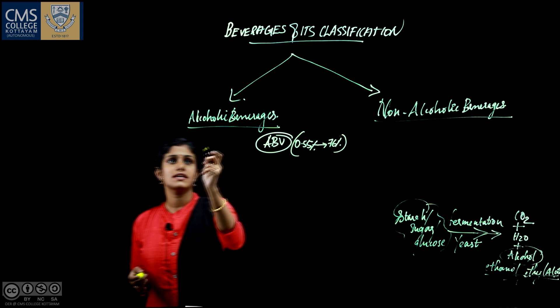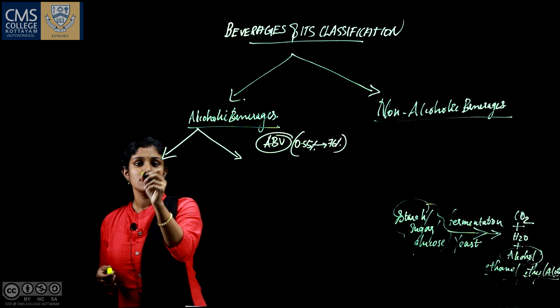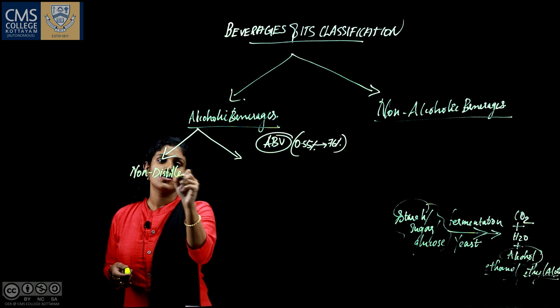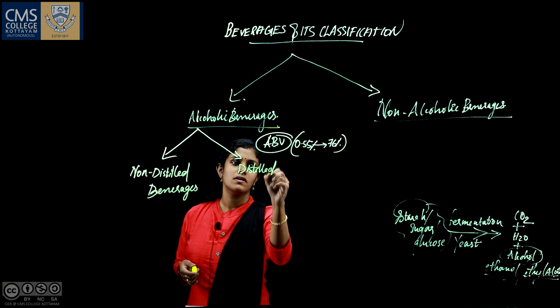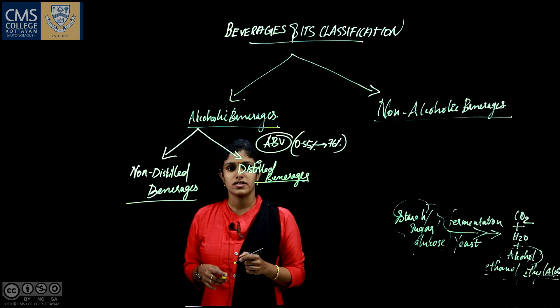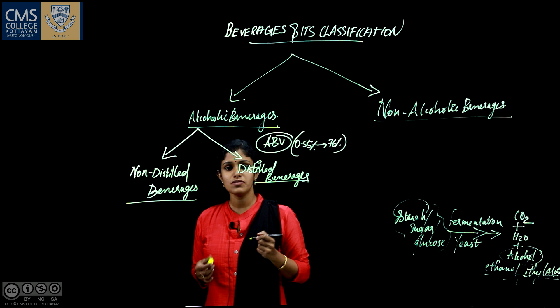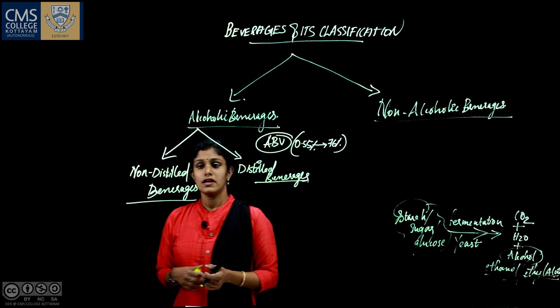Now let's see the further classification of alcoholic beverages. After fermentation, based on whether the beverage has undergone the distillation process, we can classify these into non-distilled beverages and distilled beverages. The distillation process is the separation of components from a liquid mixture by selective boiling and condensation.